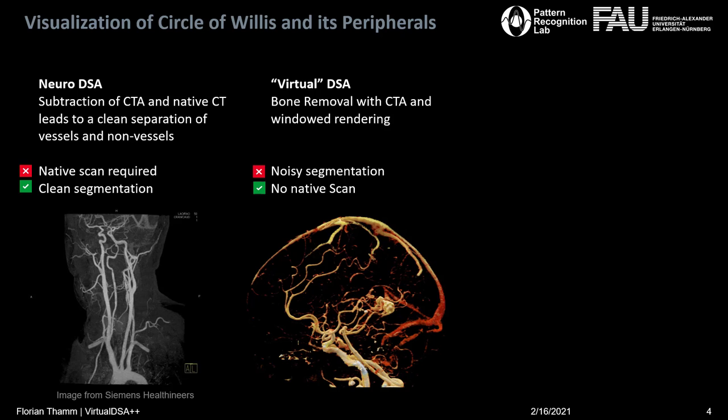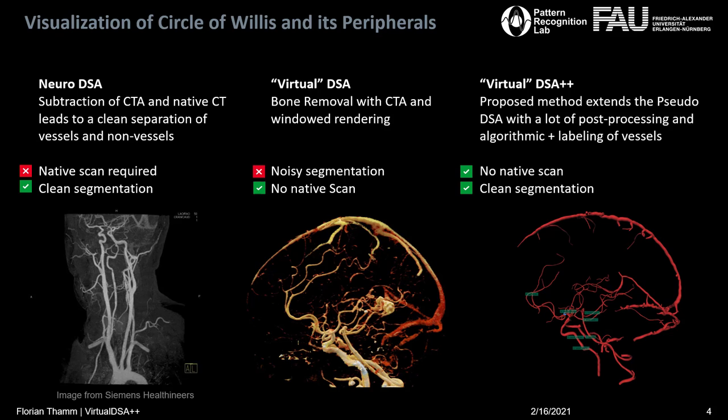The idea itself is not bad though, so we build on top of that concept and introduce VirtualDSA++, which extends the Virtual DSA with post-processing algorithms and labeling. What you can see here on the bottom right is basically a clean segmentation which requires no native scan, and combines the advantages of both left columns.